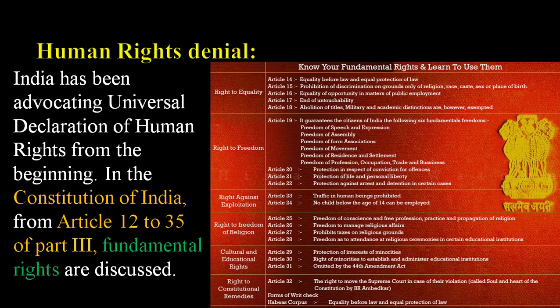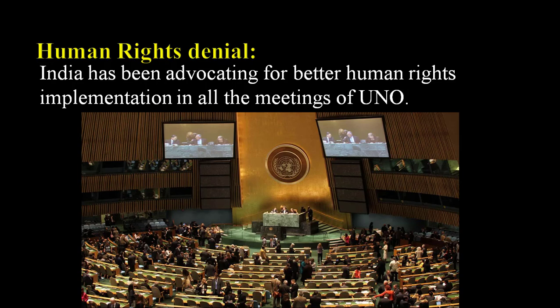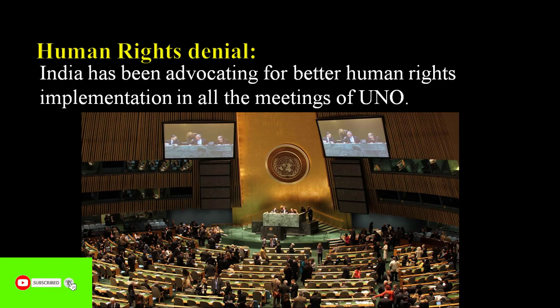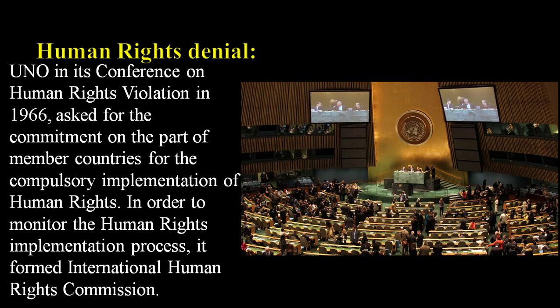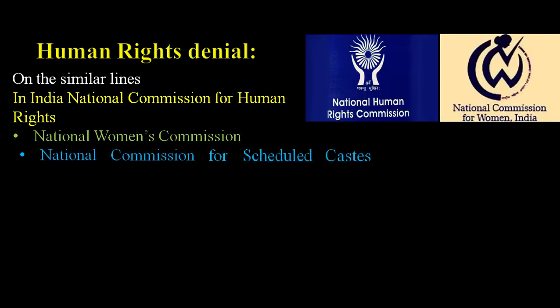India has been advocating universal declaration of human rights from the beginning. In the Constitution of India, from Article 12 to 35, Part 3, fundamental rights are discussed. India has been advocating for better human rights implementation in all UNO meetings. In its Conference on Human Rights Violation in 1966, UNO asked for commitment from member countries for the compulsory implementation of human rights. To monitor this process, it formed the International Human Rights Commission.